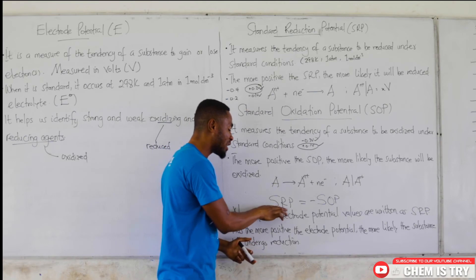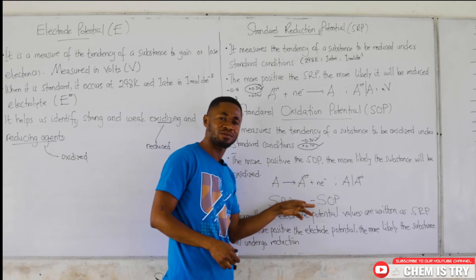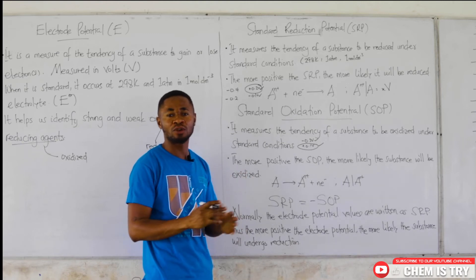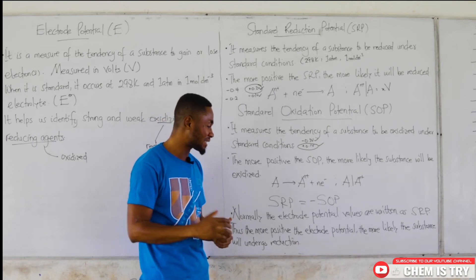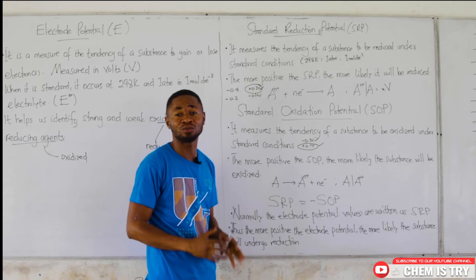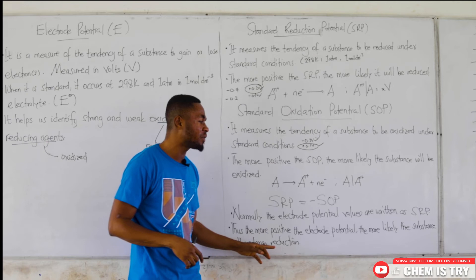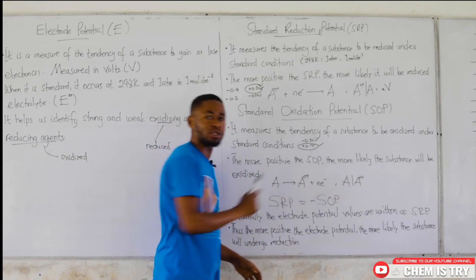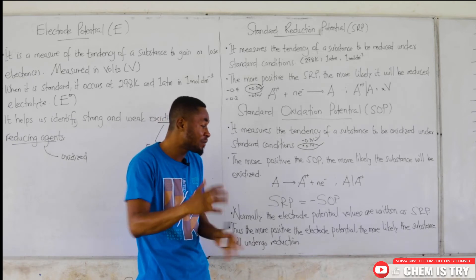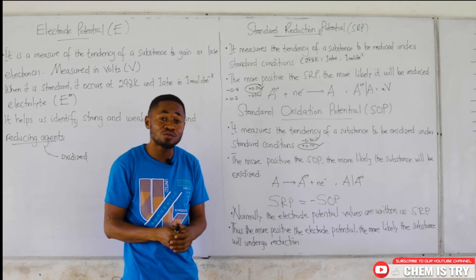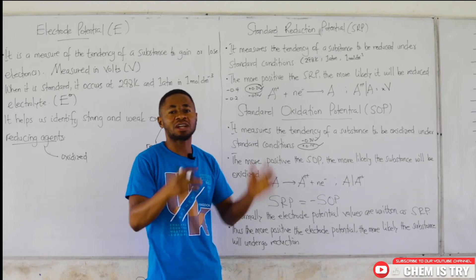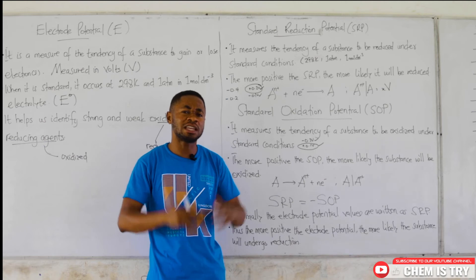One thing we need to know is the standard reduction potential value is equal to the negative of the standard oxidation potential value. Normally, electrode potential values you are going to be given would be written as standard reduction potential values. The more positive the electrode potential given to you — which we now know will be the standard reduction potential value — the more likely the substance will undergo reduction. The more negative the standard electrode potential value, the more likely the substance will undergo oxidation. We have a chart of some substances, their reduction half equations, their standard reduction potential values, and their standard oxidation potential values.